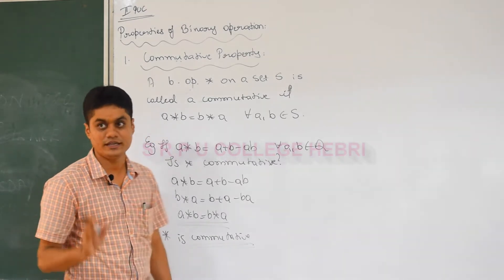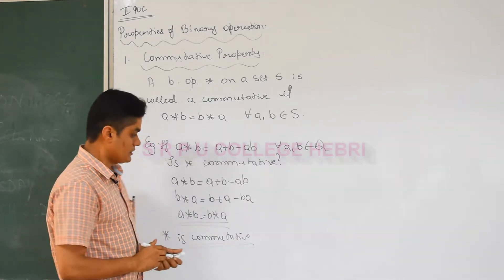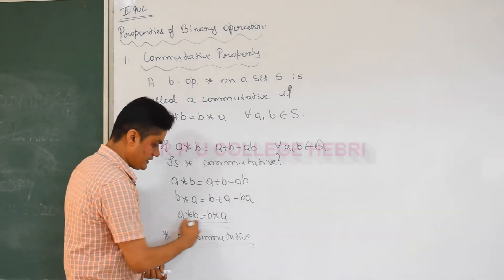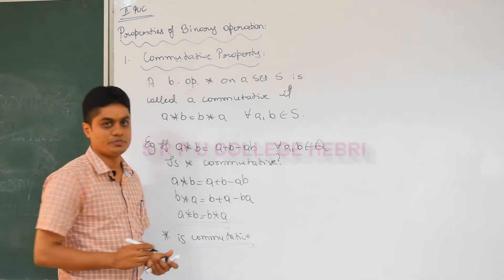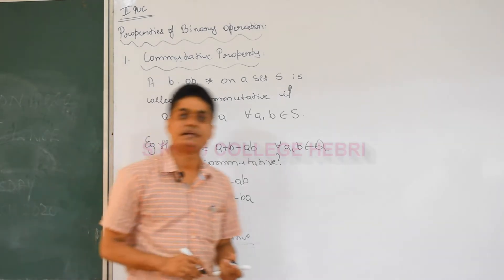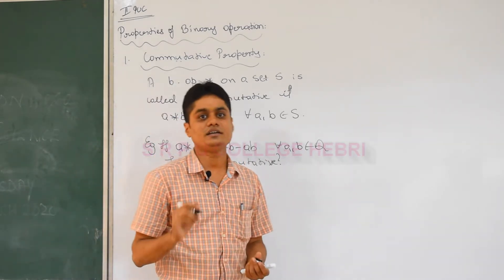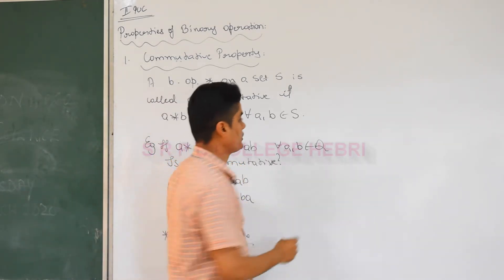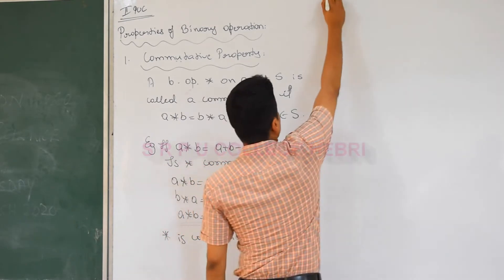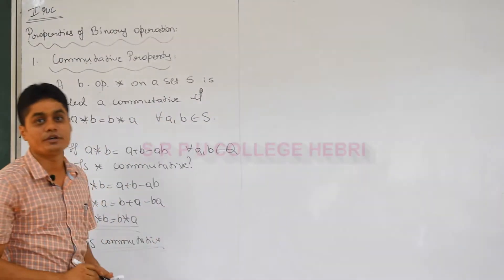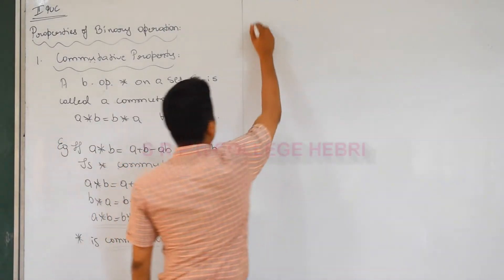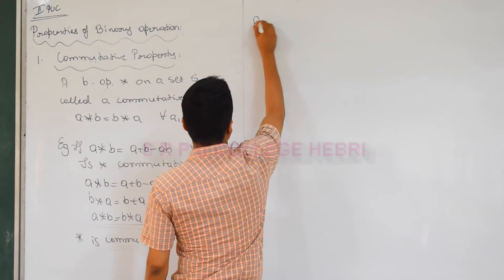After this conclusion, you can write that A star B is equal to B star A, so star satisfies commutative property. That is the first property. The next property is associative property.